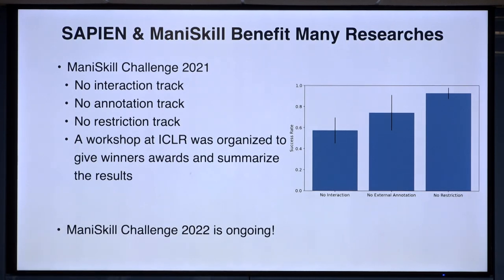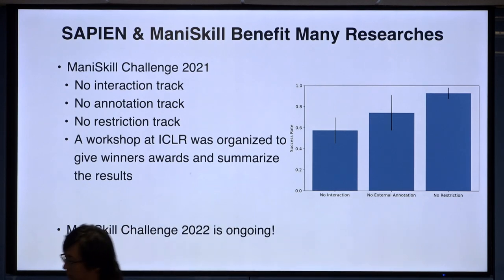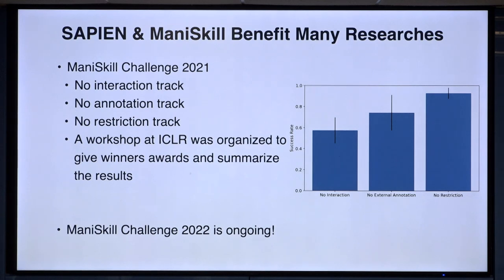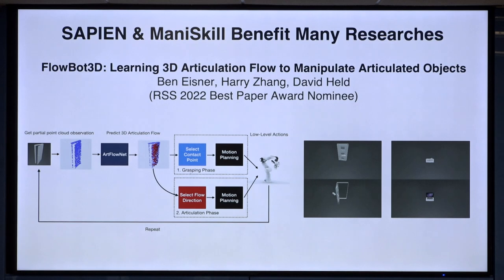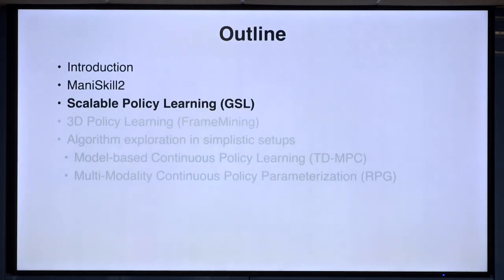The best approach in the no-restriction track was from company JD, using a more traditional task-and-motion planning approach. However, learning-based approaches were not far behind. This shows there's hope for end-to-end learning to solve difficult problems. ManiSkill has also benefited research from other groups — for instance, a work from CMU's David Held group won the RSS 2022 Best Paper Award nominee. Now I'll move to some algorithm work. This originated from building and solving ManiSkill. We'll talk about scalable policy learning.